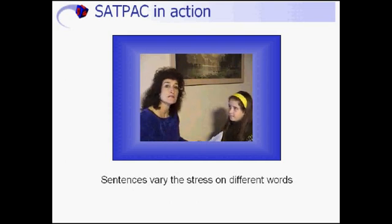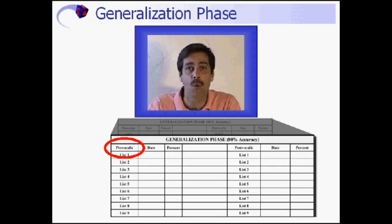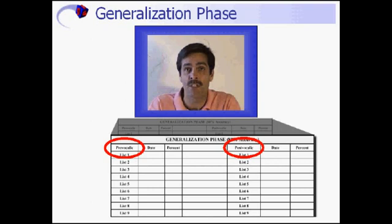There are four other sentences that are done in a similar fashion. Now the establishment and generalization phases are complete for the S in the pre-vocalic position. Some students will need to repeat the whole process with the S in the post-vocalic position. However, most will transfer and this won't be necessary. Just be aware that the checklist is set up to support both the pre- and post-vocalic positions, and it's sometimes necessary to do both.